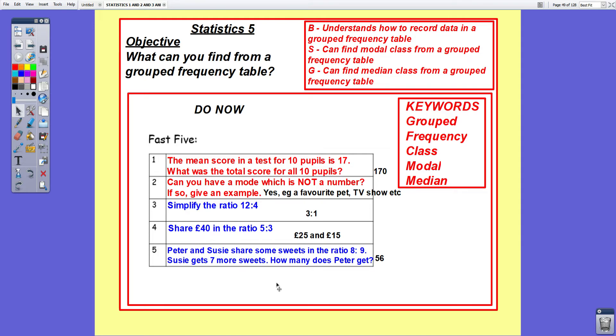Finally Peter and Susie share some sweets in the ratio 8 to 9. Susie gets 7 more sweets. How many does Peter get? If Susie gets 7 more sweets she gets 1 share more. 1 share is 7 sweets. Peter gets 8 shares, so Peter gets 8 times 7, which is 56 sweets.